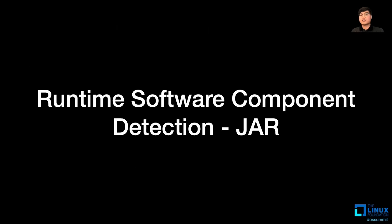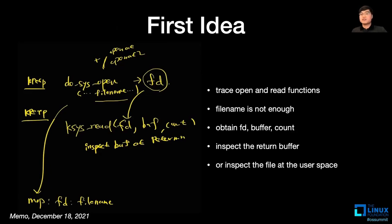Now let's talk about runtime software component detection using eBPF. eBPF allows calls to be injected and executed at certain points in the kernel, such as system calls or kernel functions. The first things that come to mind for monitoring JAR execution are the process of opening and reading files. When the Java process reads them, relevant information can be obtained from the kernel. At first I thought it was possible to get the file name just by tracking the file open, but that was not enough. I needed a way to further analyze JARs being run.